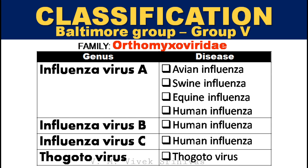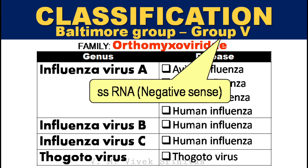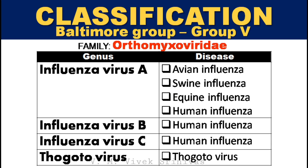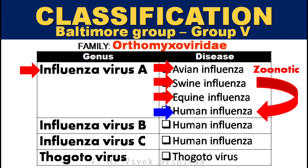Classification: Orthomyxoviridae family, classified under the Baltimore Group 5. The genera under this family include influenza virus type A, type B, type C, and thogatavirus. Only influenza virus type A is known to infect animals and also infect humans, and it can be zoonotic.